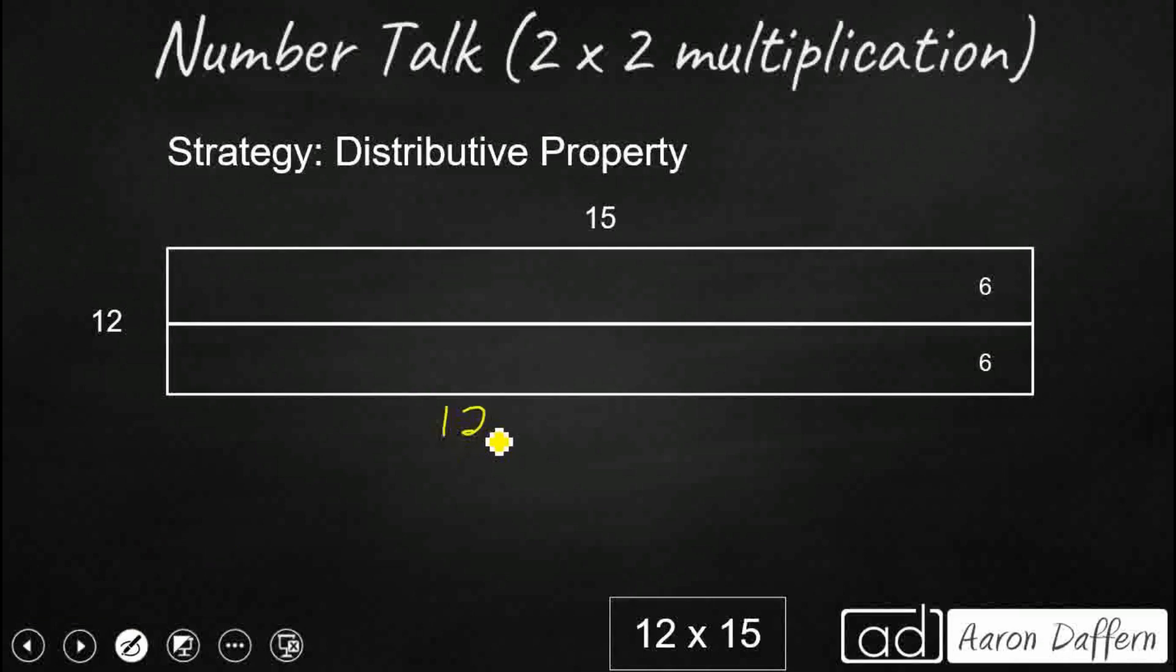All right, so when we get started, we're going to get started with our distributive property. There's many different ways that we can use this distributive property, which lets us break apart one of our factors. So in this case, we took our factor of 12 and we broke it up into 6 plus 6. So let's look at it like this. Instead of 12 times 15, it's really 6 plus 6 times 15.